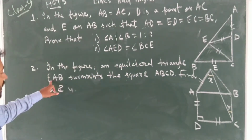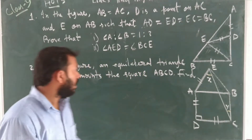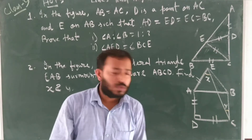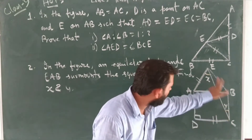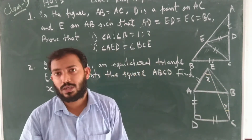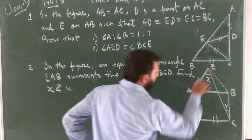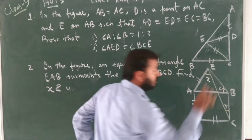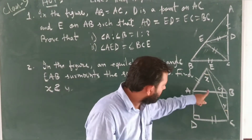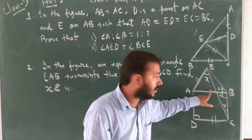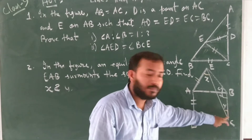Next, AB is a side of the square ABCE. The equilateral triangle sits on top of that square on side AB. The square gives you 90 degrees for each angle. Side AB is a side of the square, and the same AB is a side of the equilateral triangle.